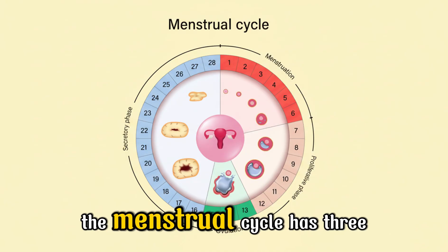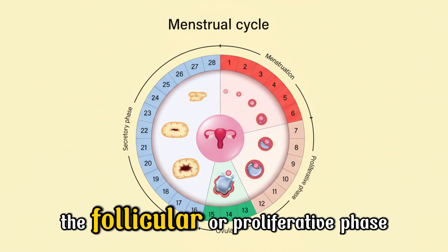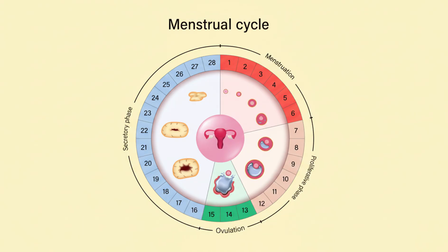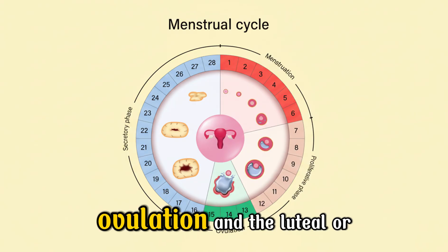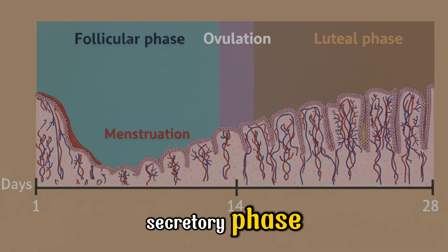The menstrual cycle has three major phases: the follicular or proliferative phase, ovulation, and the luteal or secretory phase.